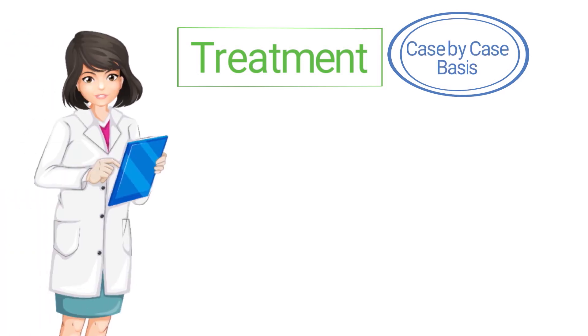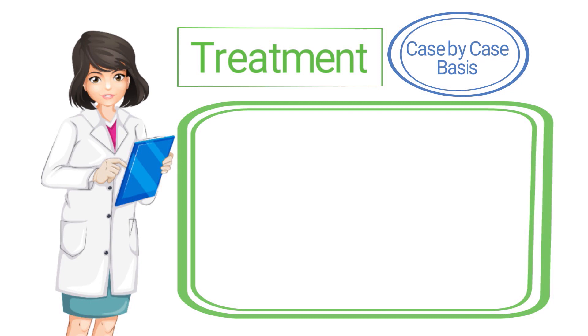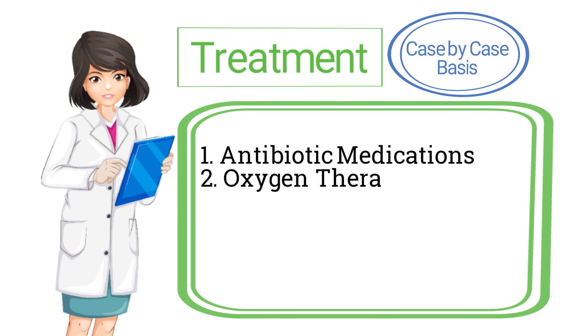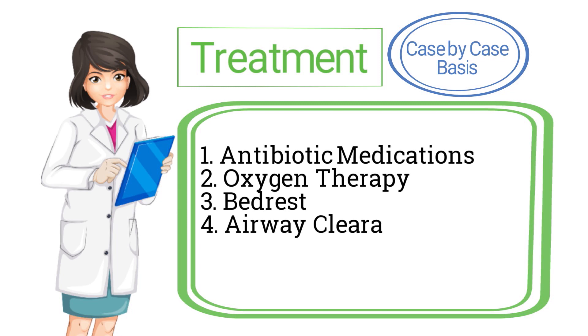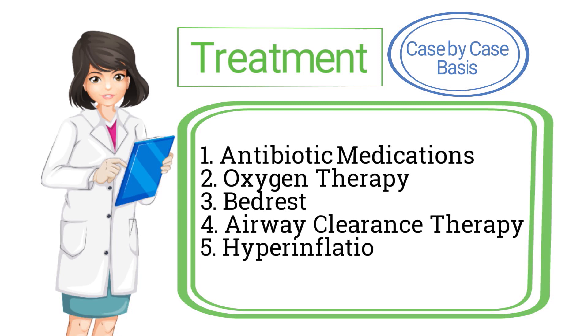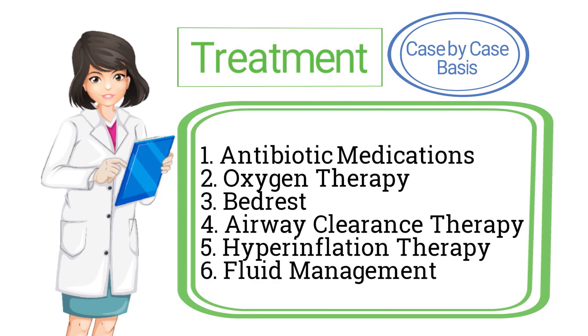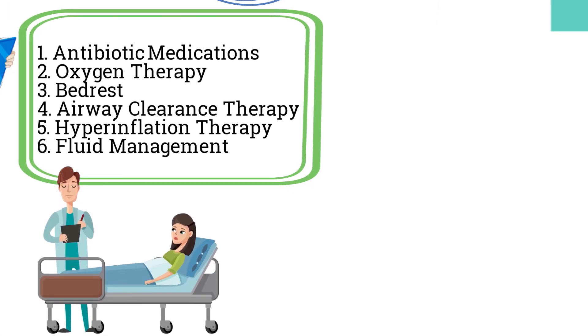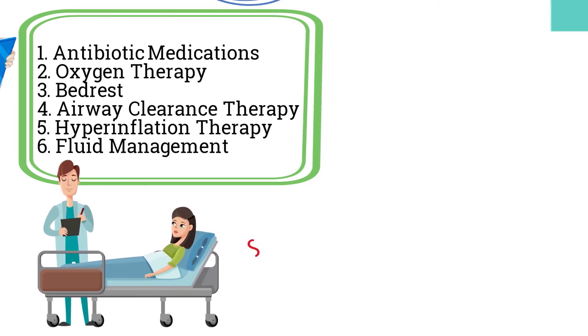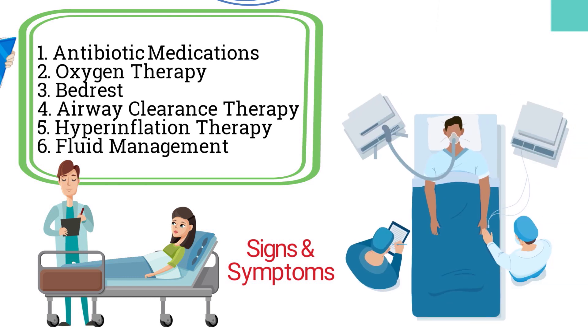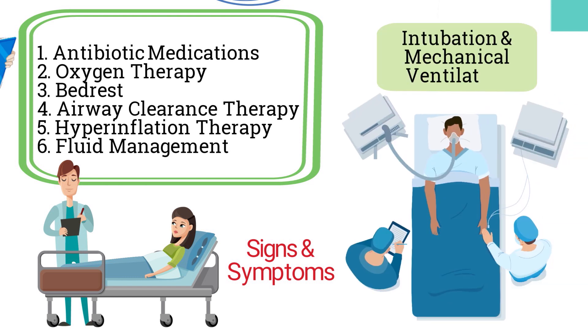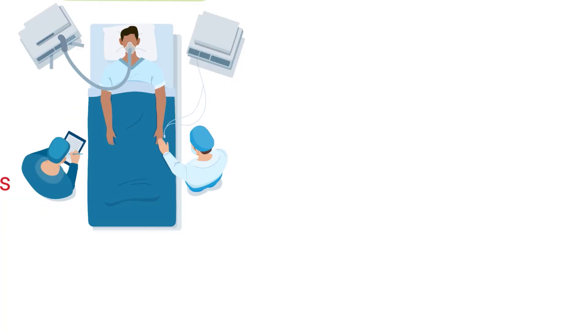Pneumonia in general should be treated on a case-by-case basis. However, some of the most common treatment methods include antibiotic medications, oxygen therapy, bed rest, airway clearance therapy, hyperinflation therapy, and fluid management. Each patient may require different treatment modalities depending on their signs and symptoms. In severe cases, intubation and mechanical ventilation may be indicated.